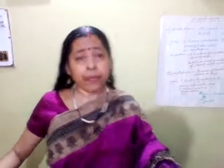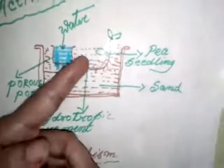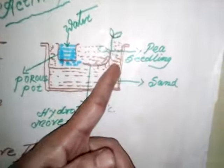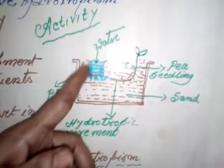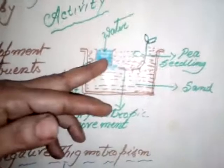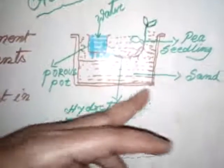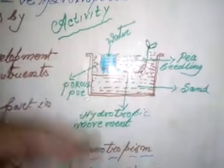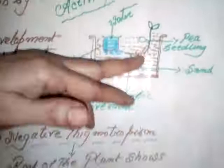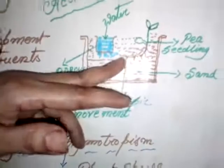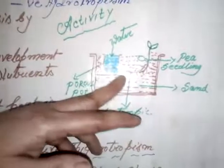Hydrotropism plays an important role for the survival of plants on Earth. Now I am explaining positive hydrotropism with the help of an activity. This is a pot filled with dry sand, and a freshly germinated seedling of tea is kept here. Beside it is a porous pot filled with water. The whole equipment is kept as-is for a few days. After a few days, we observe that the root is growing towards the water coming out from the porous pot, thus showing positive hydrotropism.